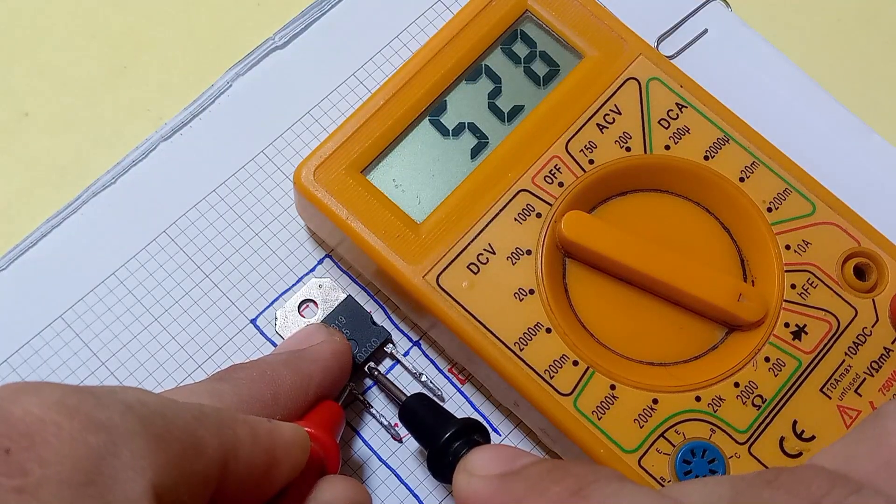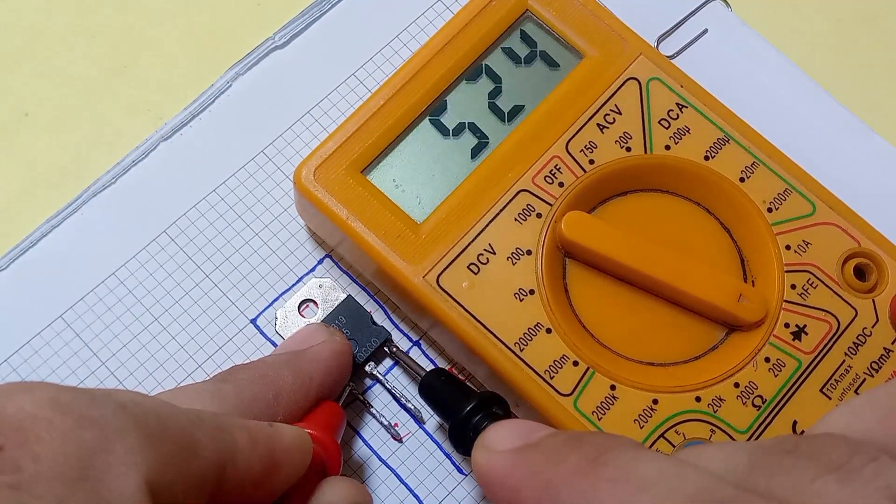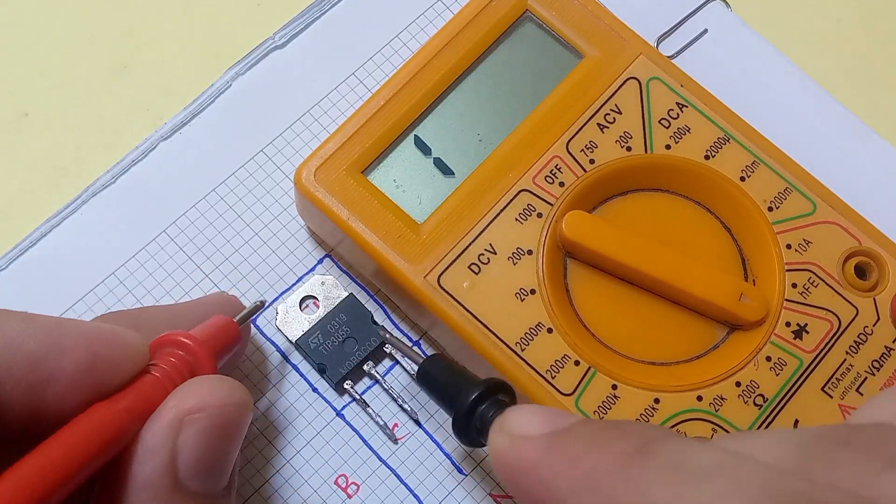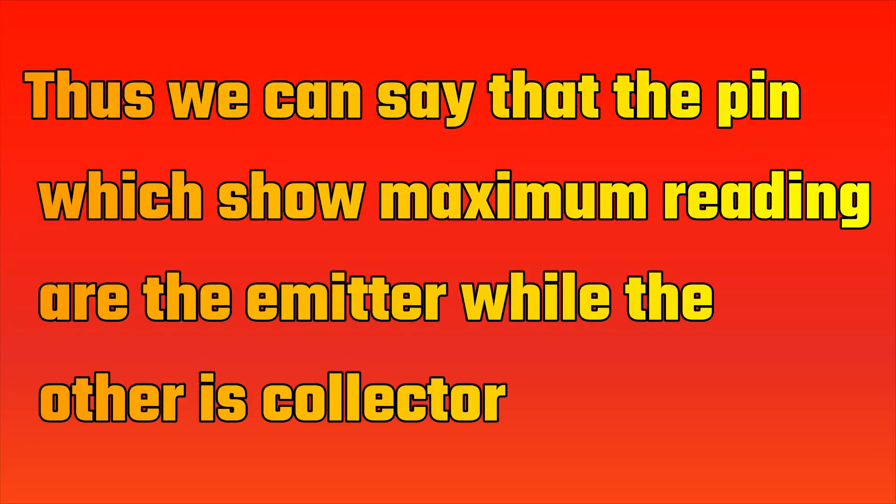As you see, the base-collector reading is 528, while base-emitter is 530. Thus we can say that the pin which shows maximum reading is the emitter, while the other is the collector.